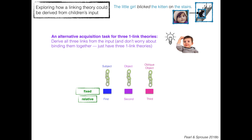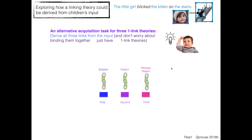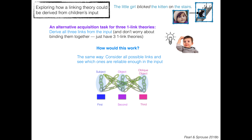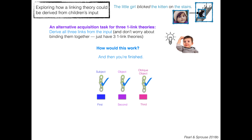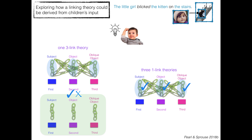What if we had just three one-link theories instead? The difference from an acquisition standpoint is that it actually makes your life simpler. If you really are just having three individual one-link theories, all you have to do is derive all the individual links from the input, and you don't have to worry about binding them together. You just have as your mental representation three one-link theories with no need to bind them. You consider all possible links and see which ones are reliable enough in the input, and then you're done — it's a one-step acquisition task.